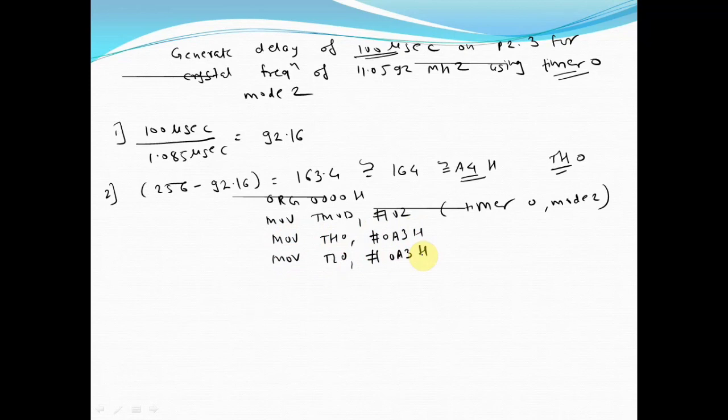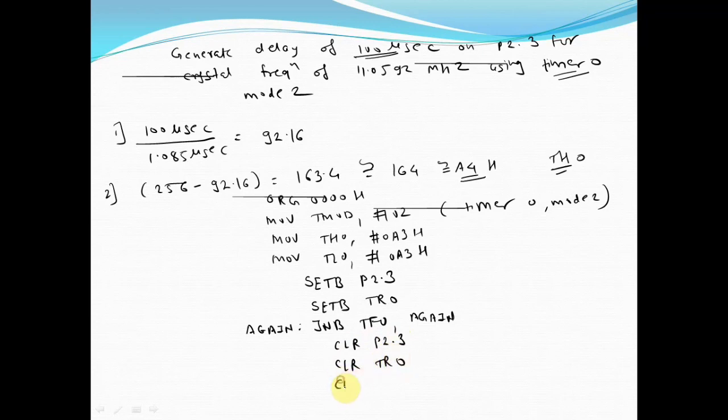Once you do this, we have to start the timer, but before that we are toggling the port pin P2.3, so write the instruction SETB P2.3, and now you start the timer. SET B TR0 and monitor the overflow flag: JNB TF0, and give some label. Unless and until the overflow flag is set, the control will remain on the same line. When TF0 becomes 1, it will come out of the loop.